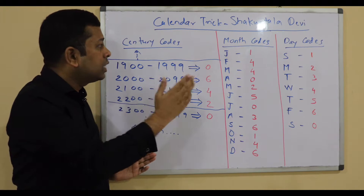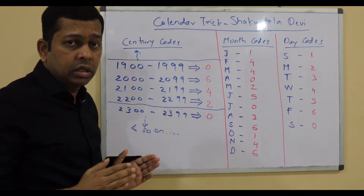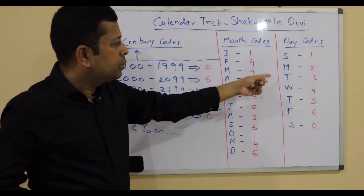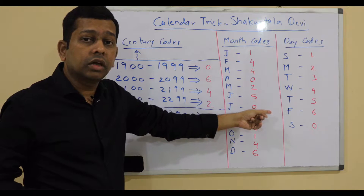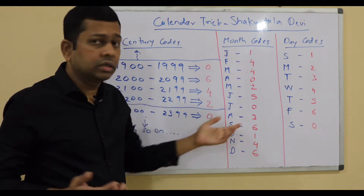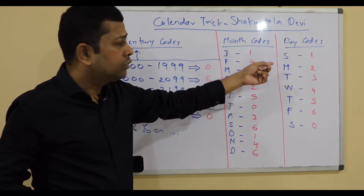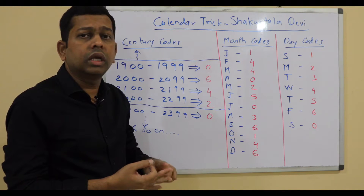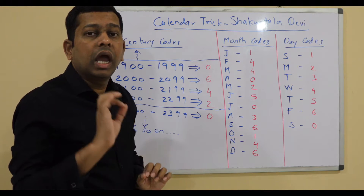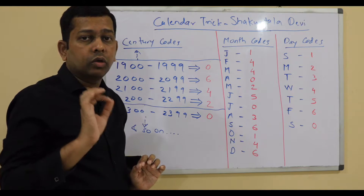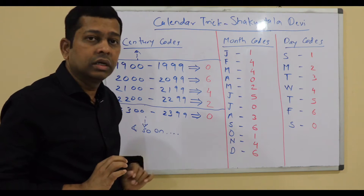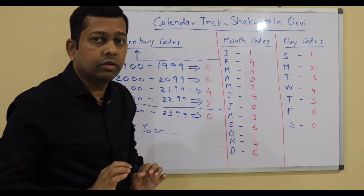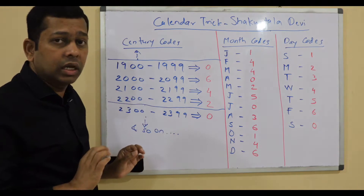For this trick, what you need to commit to memory is the day code, month code, and century codes. Day codes are simple — Sunday, Monday, Tuesday, Wednesday, Thursday, Friday, Saturday. It starts with one: Sunday is 1, then 2, 3, 4, 5, 6, and 0 instead of 7 for the last day. Sunday is the first day — that's something you need to remember.